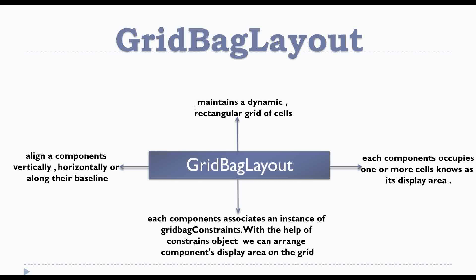GridBagLayout aligns components vertically, horizontally, or along their baselines. It maintains a dynamic rectangular grid of cells. In this layout, each component occupies one or more cells, and this is also known as the display area. In GridBagLayout, each component associates an instance of GridBagConstraints, and with the help of the constraints object we can arrange the component display area on the grid.